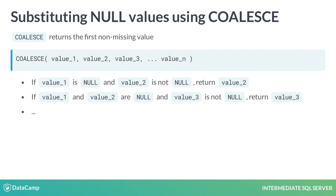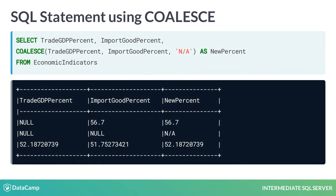Another way to replace null values is to use the COALESCE statement. You can pass multiple values to COALESCE, and it will always return the first non-null value. It is similar to using a series of if-then-else statements to return the first non-missing value. Here is a query to show how COALESCE works. For the first row, since the value in Trade GDP% is null and the value in Import Good% is not null, New% is given the value from the Import Good% column. For the second row, both Trade GDP% and Import Good% are null, so the New% column is assigned the value NA.